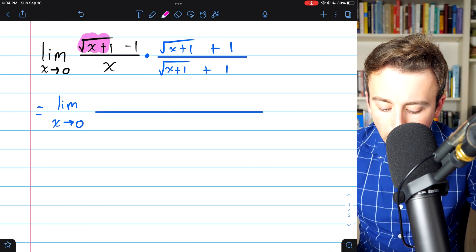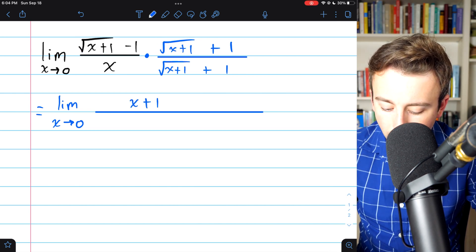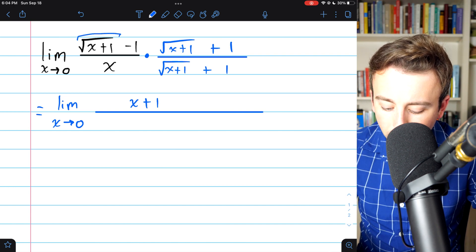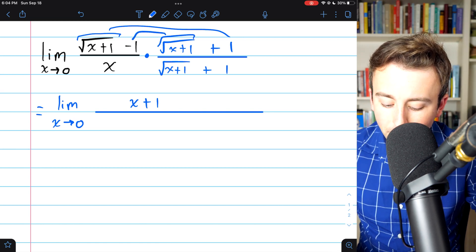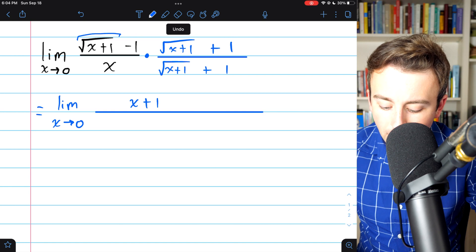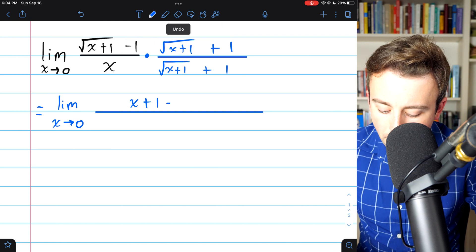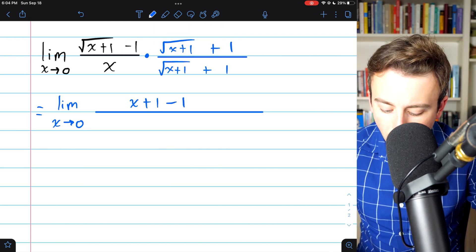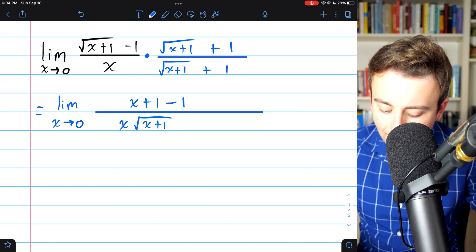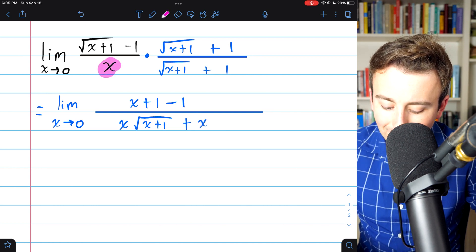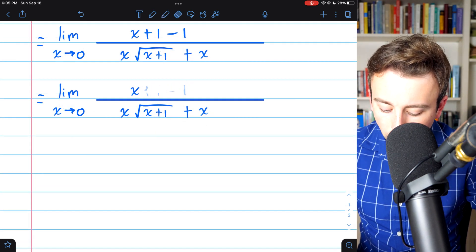So let's do this. In the numerator, we'll have square root of x plus 1 times square root of x plus 1, which is just x plus 1. Then we would have square root of x plus 1 times positive 1, and then square root of x plus 1 times negative 1. Those will cancel out, and so the only other term we have in the numerator is negative 1 times positive 1, or minus 1. Then, in the denominator, we have x times the square root of x plus 1, and then plus x. That's just distributing this x across this binomial. Now, in the numerator, the plus 1 and minus 1 will, of course, cancel out. And so, very nice, we're just left with x.